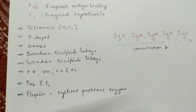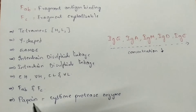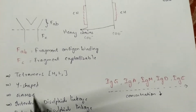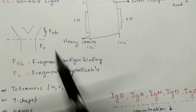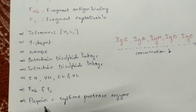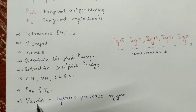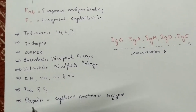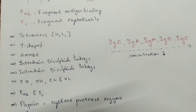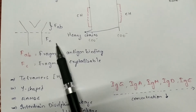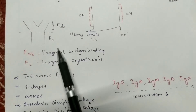The immunoglobulin consists of FAB and FC ends as just explained. One more important point: PAPAIN is the enzyme that helps in the identical division of the FAB and FC ends of the immunoglobulin. PAPAIN is a protease enzyme that can be found in papaya.